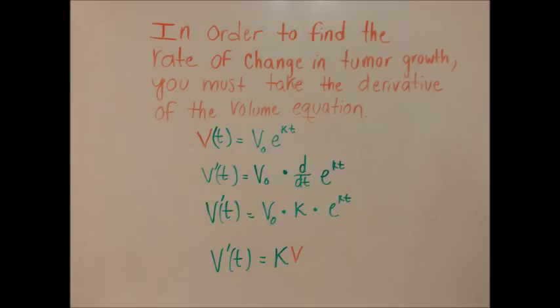When finding the derivative of e to the kt, we use the chain rule, which leaves us with V prime equals V naught times K times e to the kt.